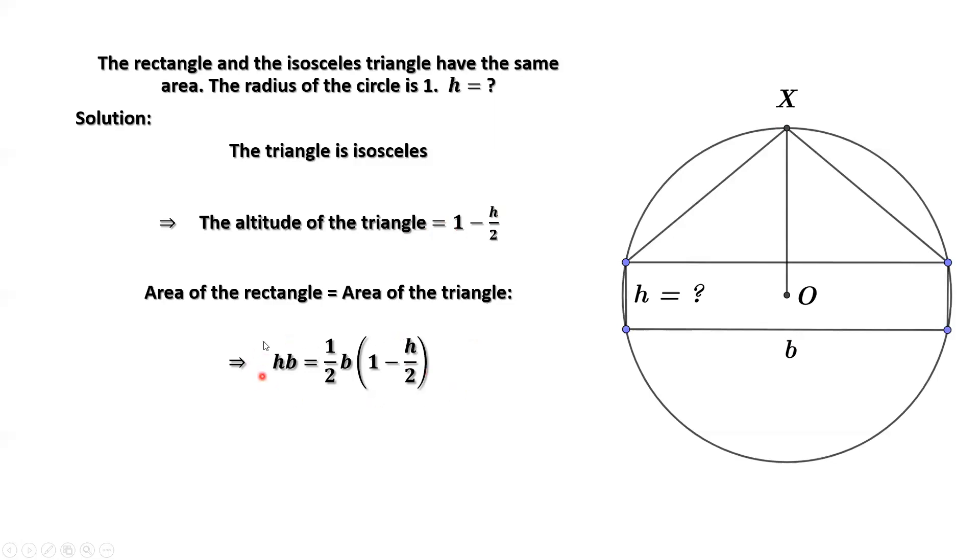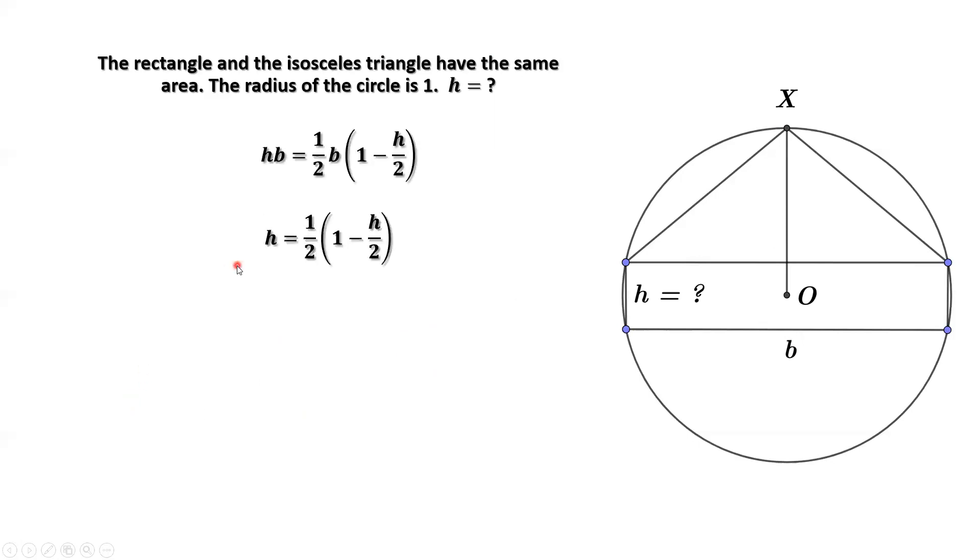We divide b on both sides of this equation. Then we have h equals one half times one minus h over two. Both sides times four. We have four h equals two minus h. Therefore, h equals two over five.